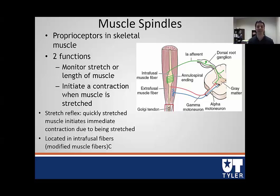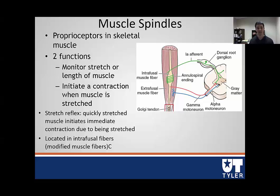The intrafusal fiber is innervated by a type 1A afferent neuron. Afferent means sensory, so this is going to be providing sensory feedback. The afferent neuron innervates the intrafusal fiber and sends information about the stretch and length of that muscle back into the spinal cord. The spinal cord can then send information up to the brain to provide feedback and allow reflexes. We have two options: we can affect an alpha motor neuron, which is what innervates our extrafusal muscle fibers.